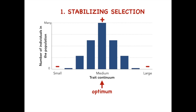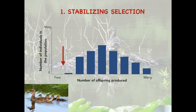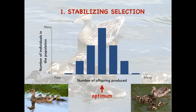An example of stabilizing selection is number of offspring born to an individual parent. Too few offspring is a value selected against because not enough of them may be viable. Too many offspring is a value selected against because each individual may not get enough resources from the parent. The optimum is selected for and we see an increase in the number of individuals who have the ideal-sized clutch.